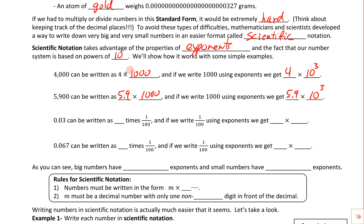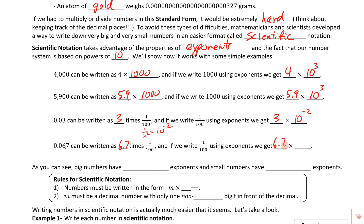Now let's look at small numbers. 0.03 is three hundredths, which can be written as 3 times one hundredth. Writing one hundredth using exponents gives us 1 over 10 squared, and using the negative exponent rule to move it to the numerator gives us 3 times 10 to the negative 2. For 0.067, that's 6.7 hundredths — we can write that as 6.7 times 10 to the negative 2.